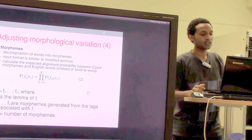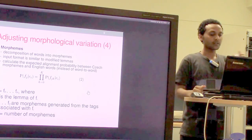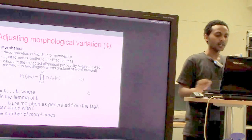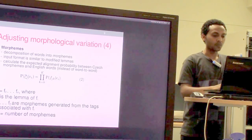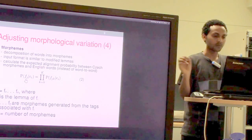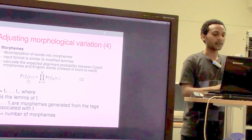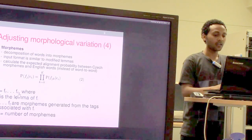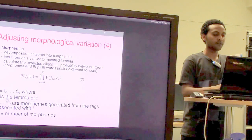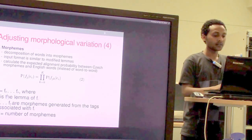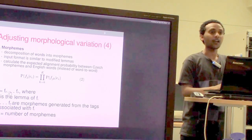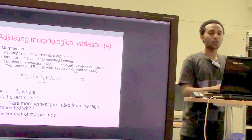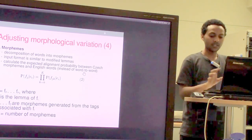Another strategy is to decompose or segment words into their morphemes. The input structure is similar to modified lemmas — pseudo words are attached to words — but the difference is that instead of word-to-word translation estimations, they calculate morpheme-to-word probabilities. In the formula, FJ represents the sequence of morphemes and EI is the English word. FJ_0 is the lemma and FJ_1 through FJ_K are the morphemes of the word, where K is the number of morphemes. These morphemes are conditioned on the English word, as opposed to word-to-word correspondences.